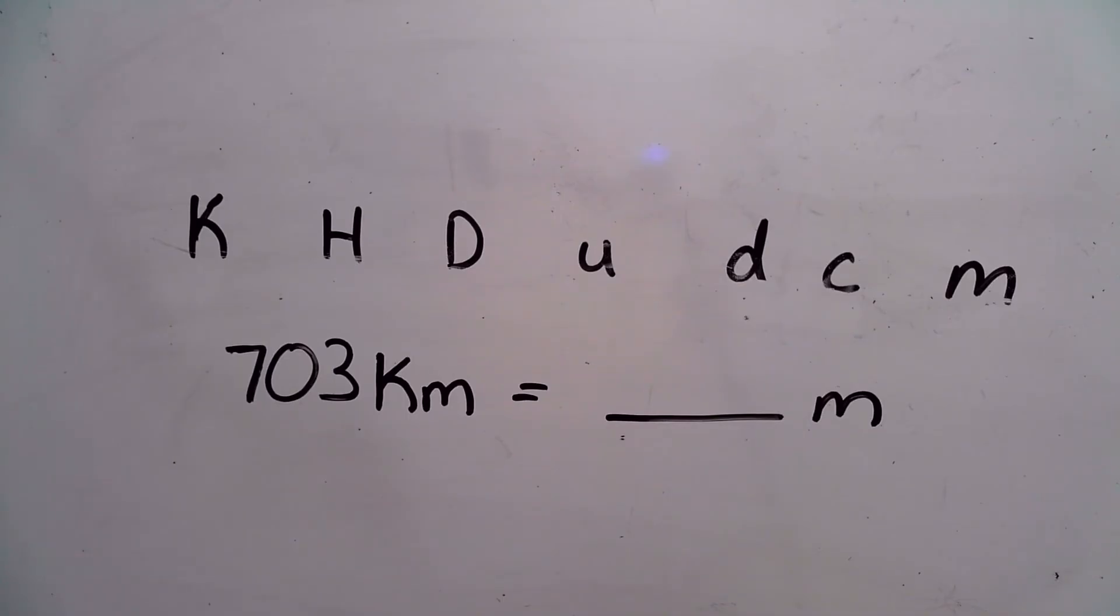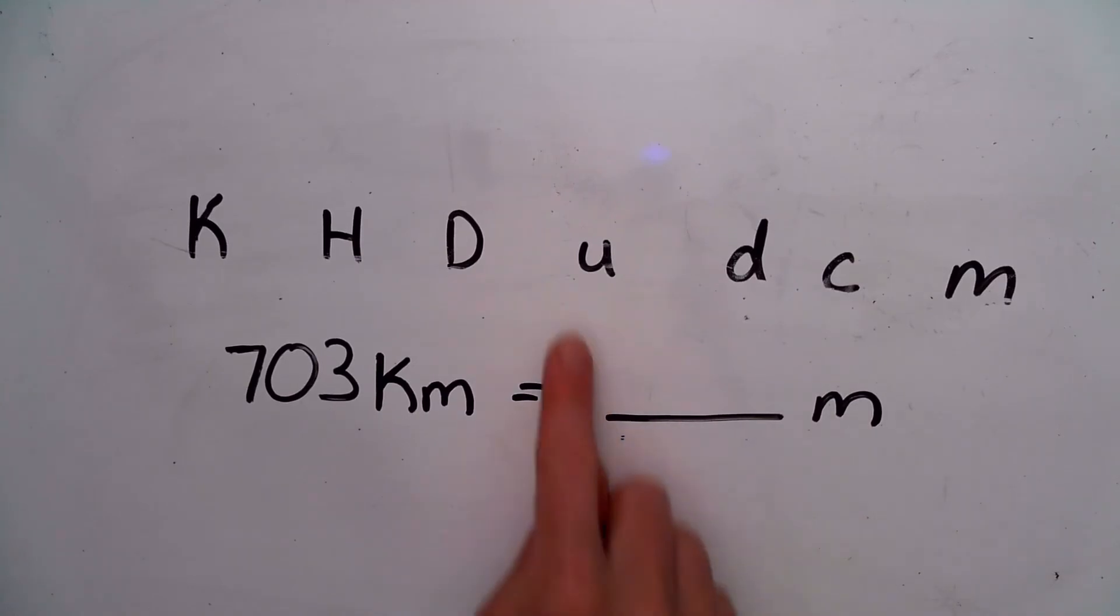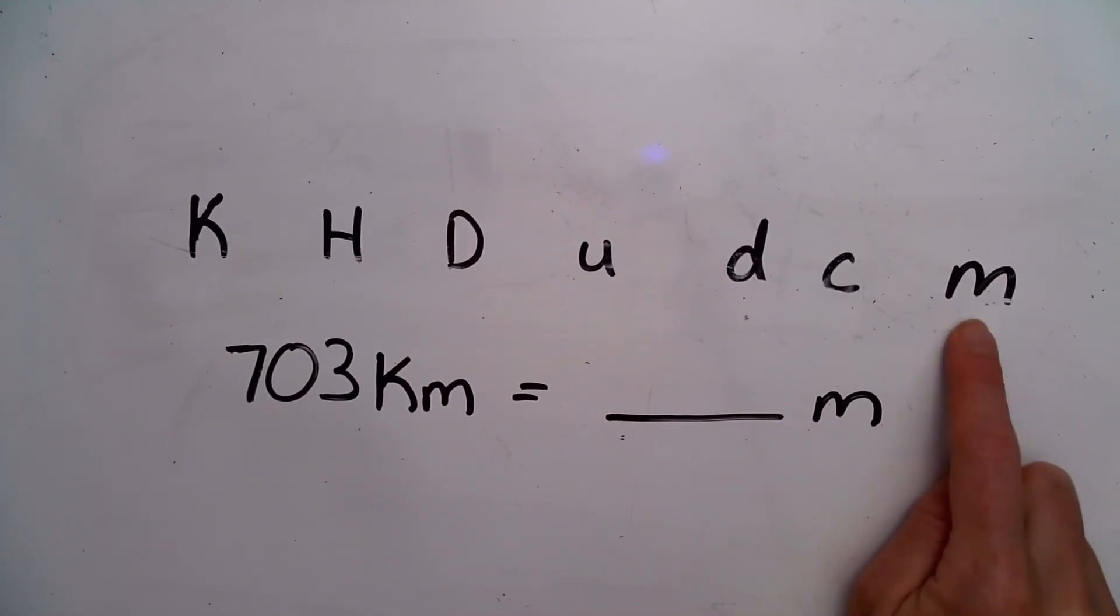M here is for meters, which is a base unit. So you want to make sure that you're paying attention. If there's just one letter here, that means we're going to go to the base unit. Or if we're starting with meters, you would start at the base unit. Do not get tricked by meters by itself. Kids always mistake it for milli, don't be that kid.